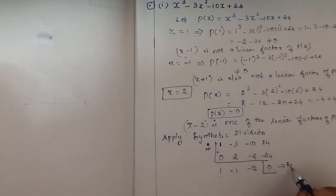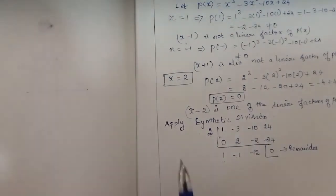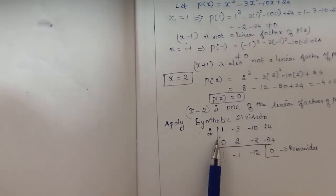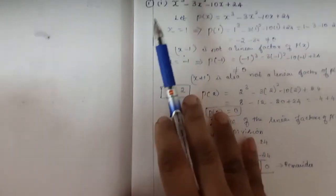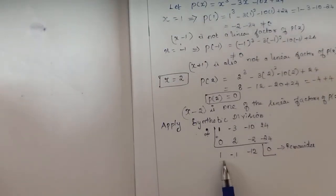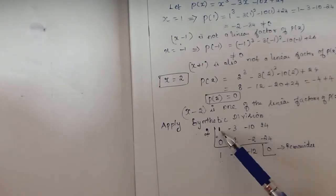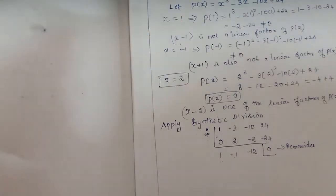The remainder is 0, which confirms x minus 2 is a factor. The resulting coefficients 1, minus 1, minus 12 represent the quotient polynomial. Since a cubic polynomial divided by a linear factor gives a degree-one-less polynomial, the quotient is the quadratic polynomial x square minus x minus 12.